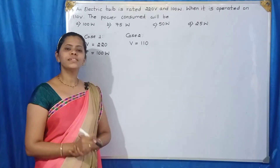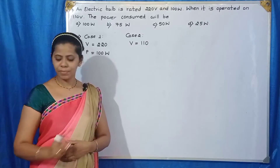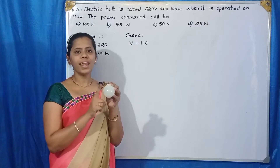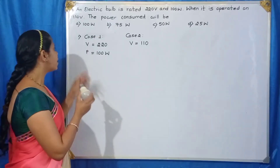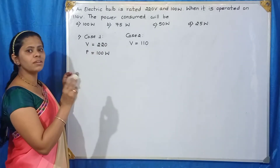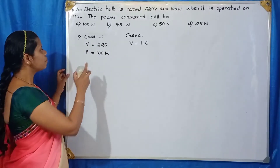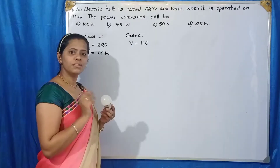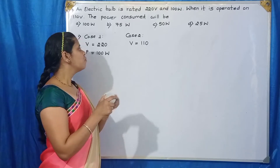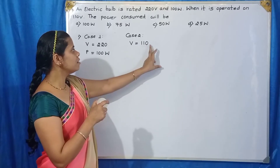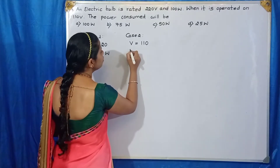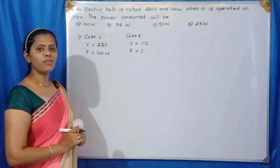Let me explain the meaning of this question. We have an electric bulb. When this electric bulb is connected to 220V, the power consumption is 100W. Now, we are connecting the same electric bulb to 110V. What is the power consumed by the bulb? We have to find out this.